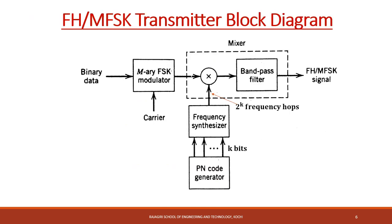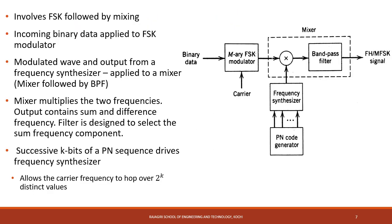Before going into slow and fast frequency hopping, let us see the block diagram of the transmitter and receiver used for Frequency Hopping with MFSK. In the FH/MFSK transmitter, first we perform M-ary FSK modulation, then we perform frequency hopping. The transmitter consists of two parts: the first is M-ary FSK modulation and the second is the frequency hopping. The input is binary data and a carrier signal, applied to an MFSK modulator.